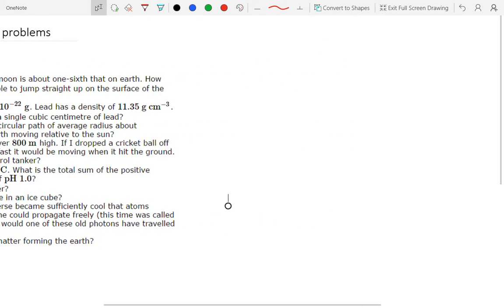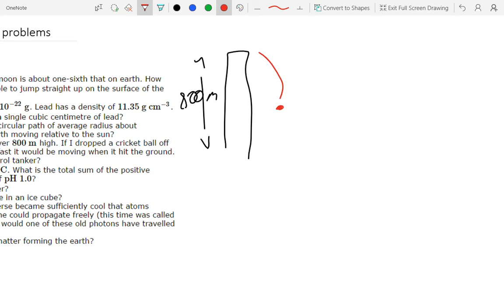So let's just draw a little quick picture, got a nice big building which is 800 metres high and we're dropping a cricket ball off and we want to work out how fast it's moving when it hits the ground, so what's the v here?